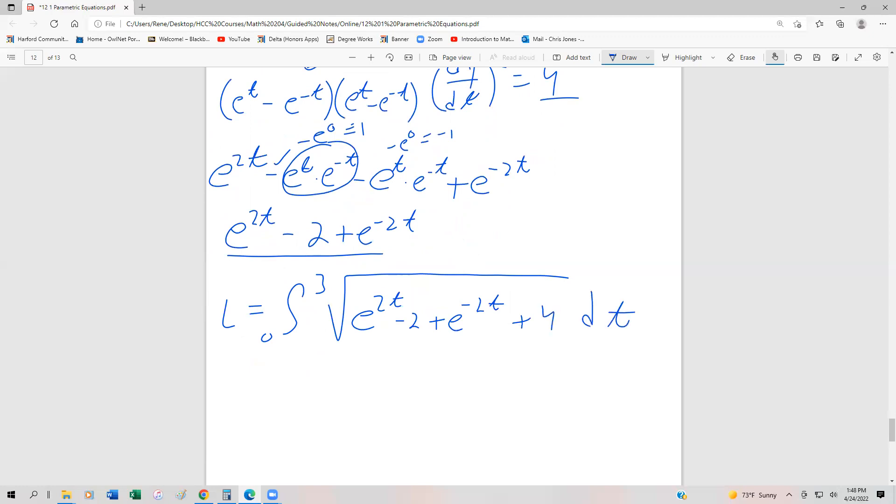Remember, we take the square of the derivative of x with respect to t squared, and the derivative of y with respect to t squared. The only thing we can do at this point is just add those two constants. So the length is going to be the integral from 0 to 3, √(e^(2t) + 2 + e^(-2t)) dt.